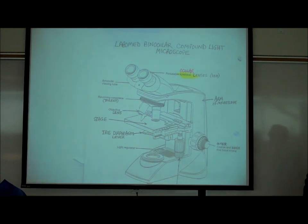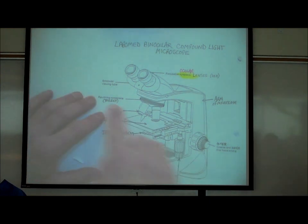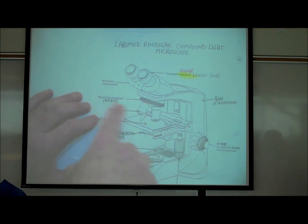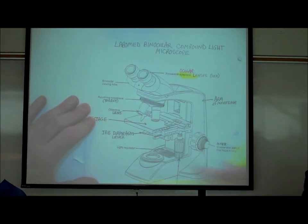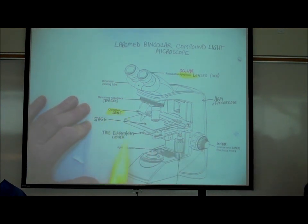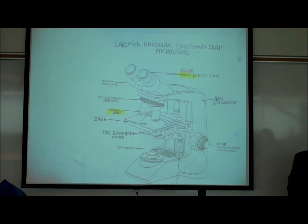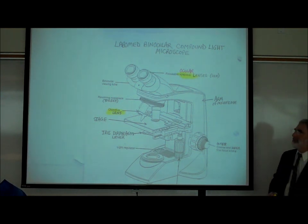Attached to the turret or revolving nosepiece are the objective lenses. There are four objective lenses on this microscope.